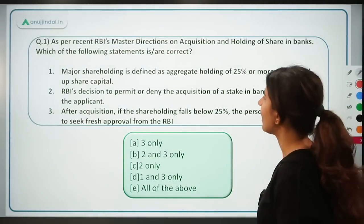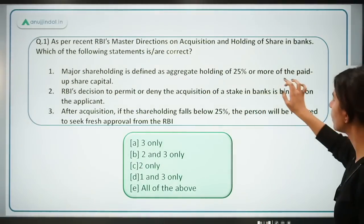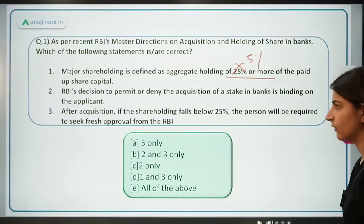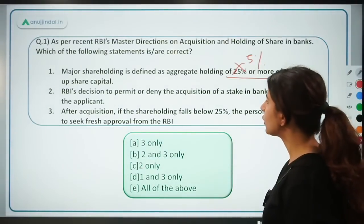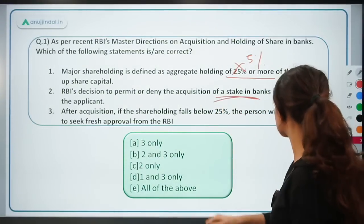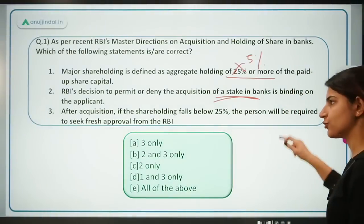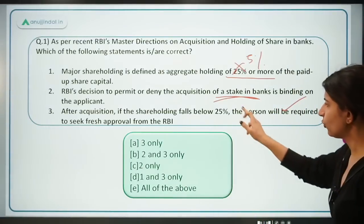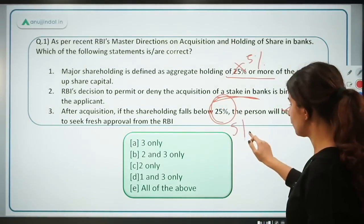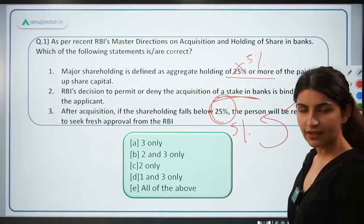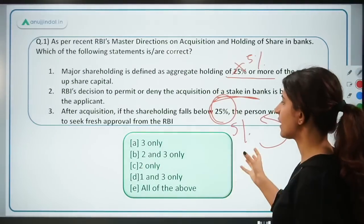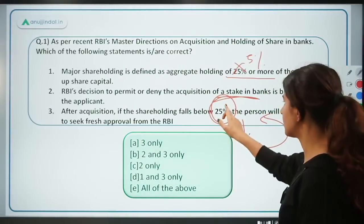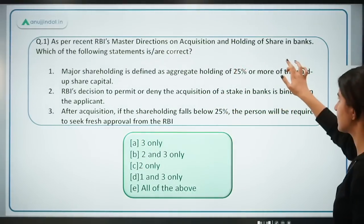Major shareholding is defined as aggregate holding of 25% or more — this is incorrect; it is 5% or more of the paid-up share capital. RBI's decision to permit or deny acquisition of a stake in banks is binding on the applicant — that is true. After acquisition, if the shareholding falls below 5% and someone wants to bring the aggregate shareholding back to 5%, a fresh approval from RBI is required — so the incorrect statement uses 25% instead of 5%.